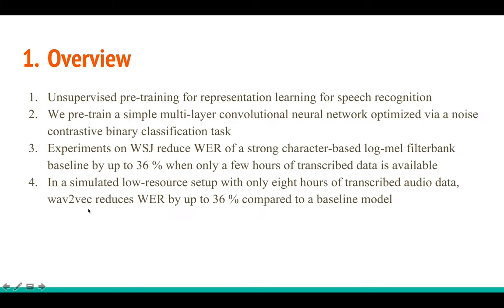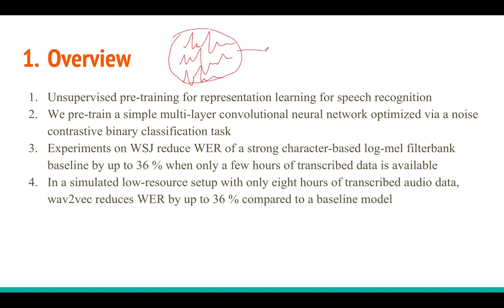This paper is mostly about unsupervised pre-training. Pre-training means training a neural network using unsupervised data. If you have a lot of audio data — just the audio, no text — how can you make use of it to train a model that understands high-level features? You can then add a few layers or train another model using a small amount of labeled data, so the model performance is better using these high-level features.